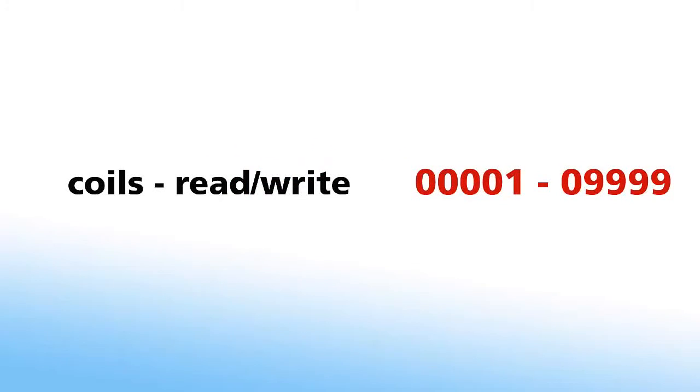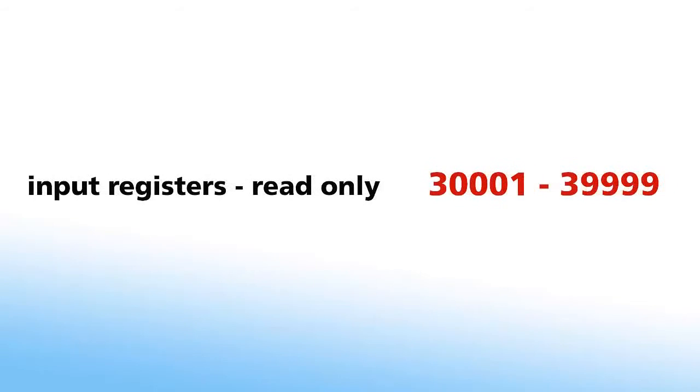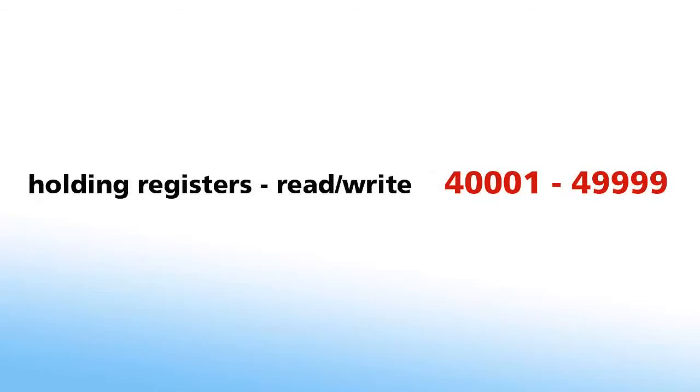Data table addresses 1 through 9,999 are the read-write table for coils. Addresses 10,001 through 19,999 are the read-only for discrete inputs. Data table addresses 30,001 through 39,999 are the read-only for input registers, and addresses 40,001 through 49,999 are the read-write table for holding registers.